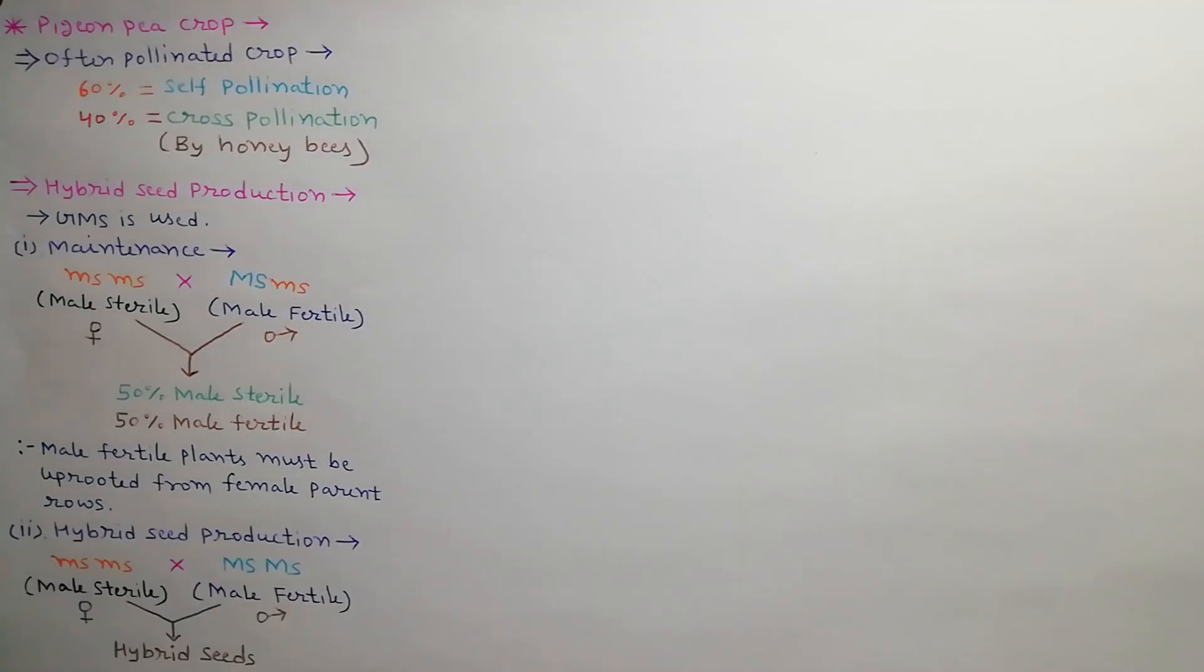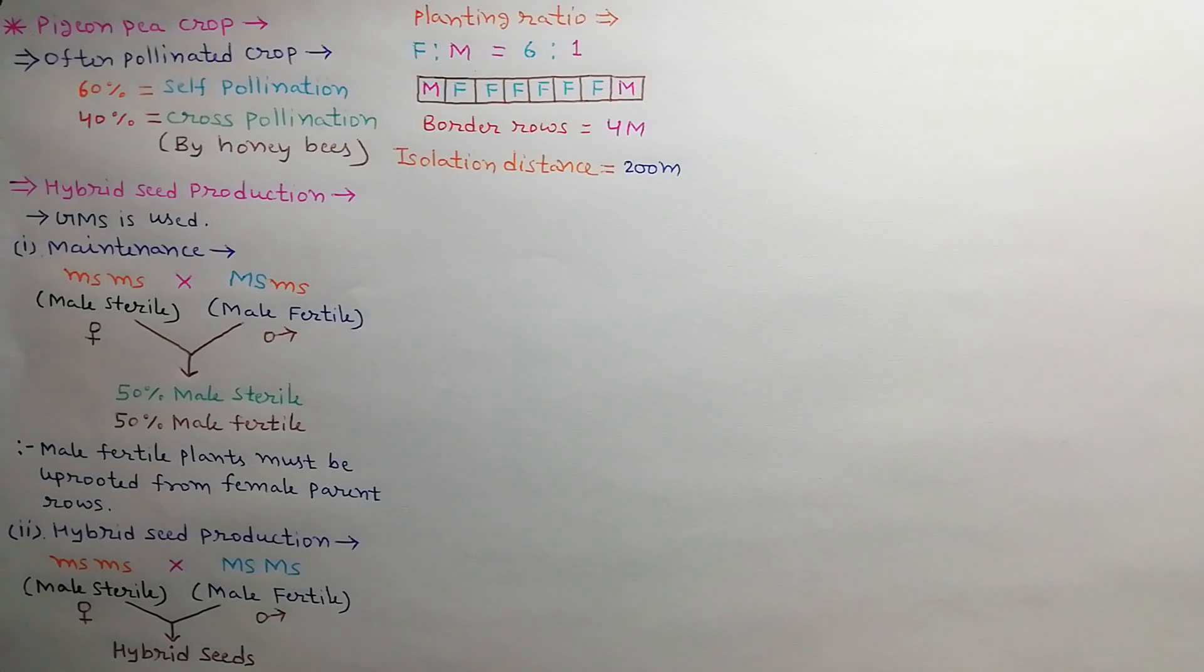Male sterile line is crossed with homozygous male fertile line for production of hybrid seeds. Parent lines are planted in the ratio of 6 female rows and 1 male row.